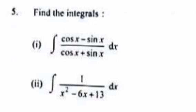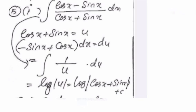Find the integral: ∫(cos x − sin x)/(cos x + sin x) dx. Answer: Let u = cos x + sin x, then du = (−sin x + cos x) dx. So the integral becomes ∫(1/u) du = log|u| = log|cos x + sin x| + C.